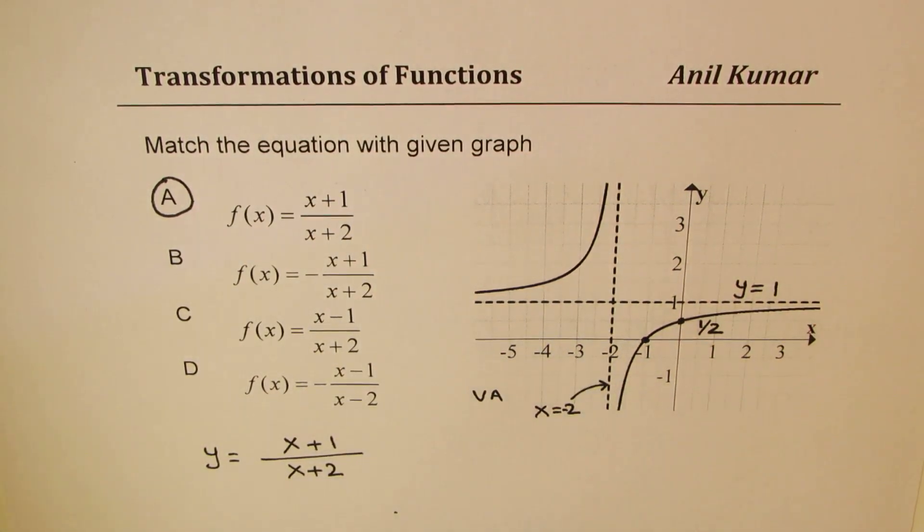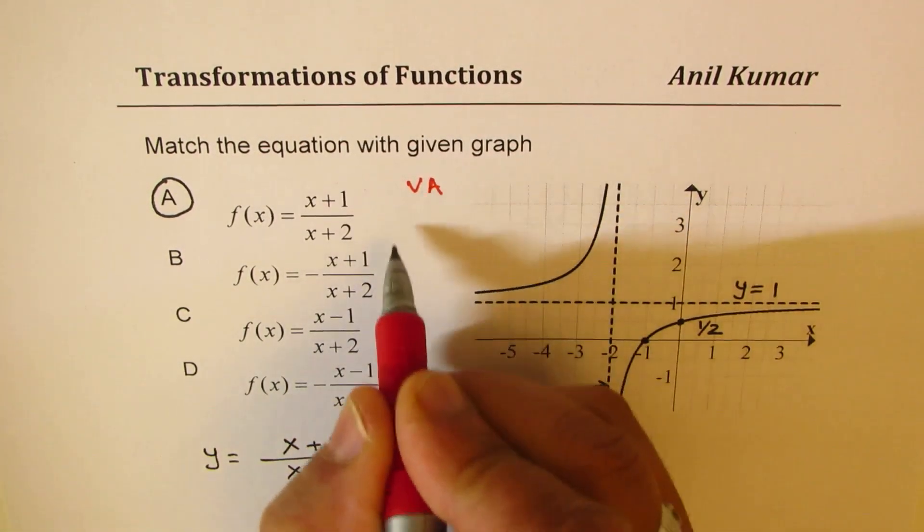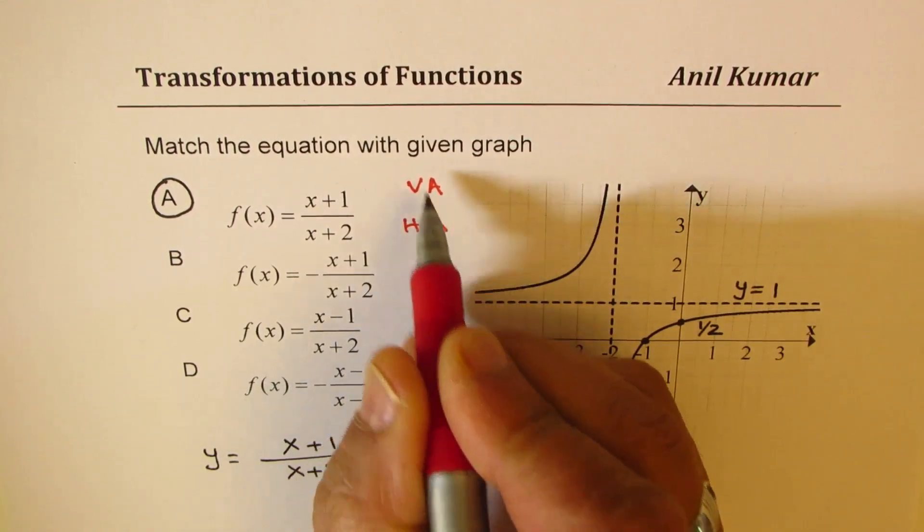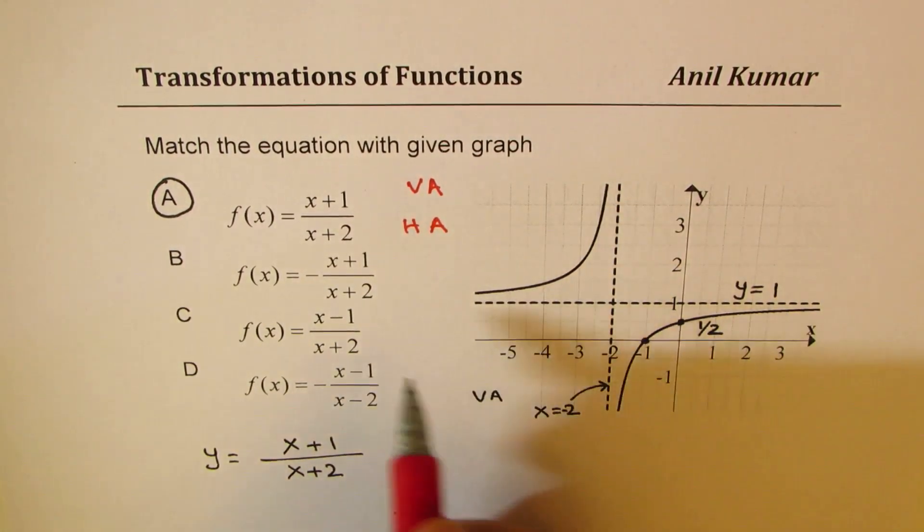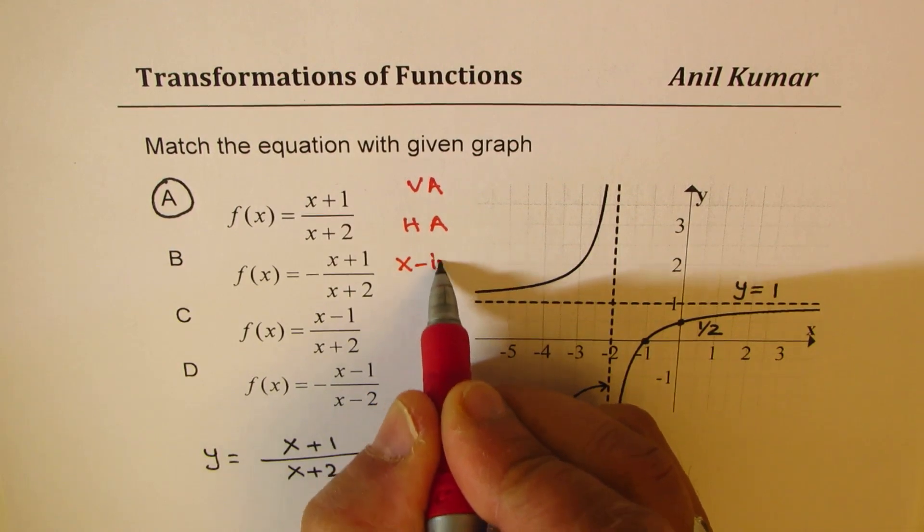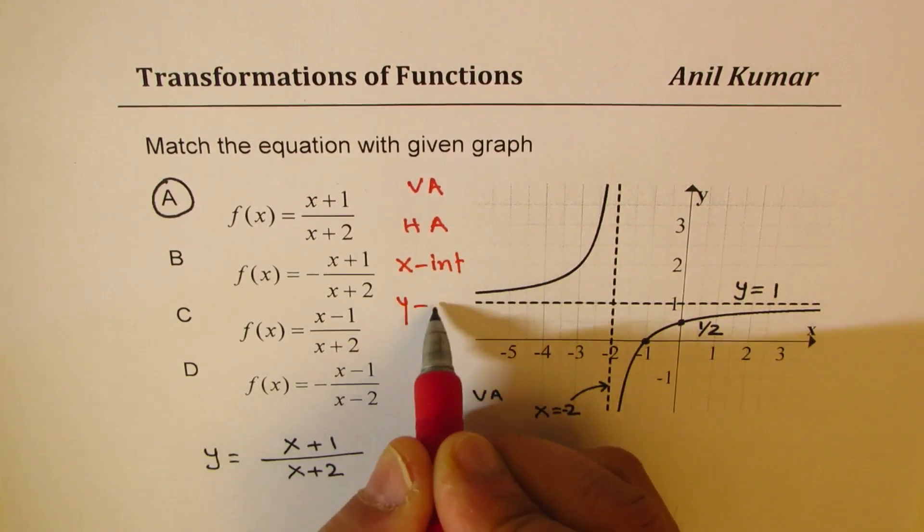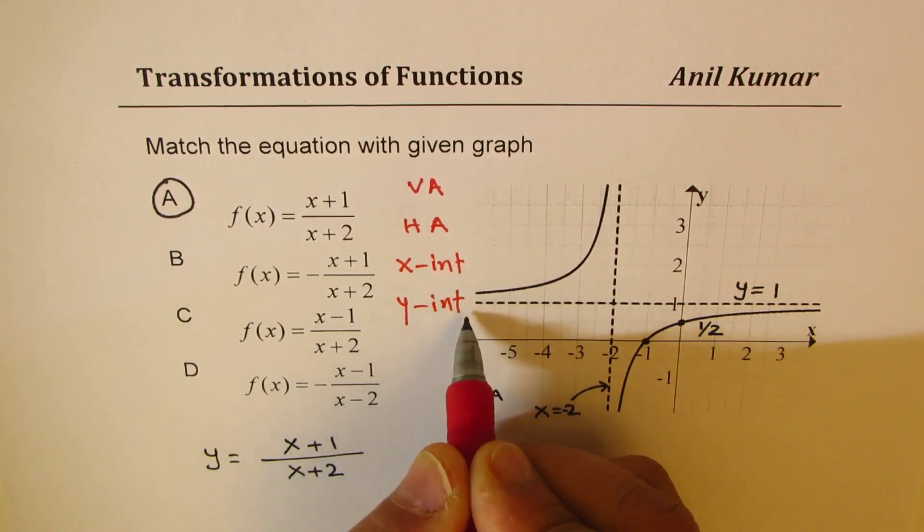So the three points which really help you to find or match the equation are: vertical asymptote, horizontal asymptote - so there are two asymptotes - then we check with x-intercept and y-intercept.